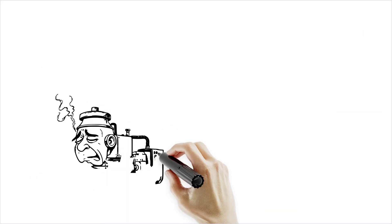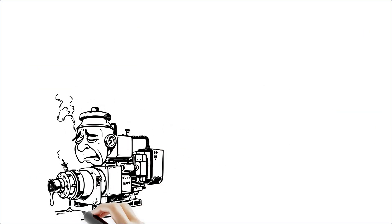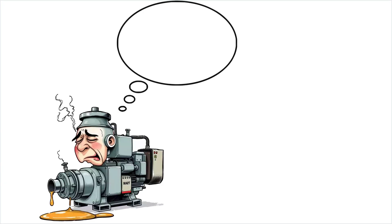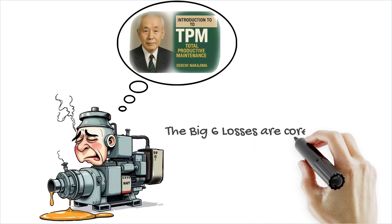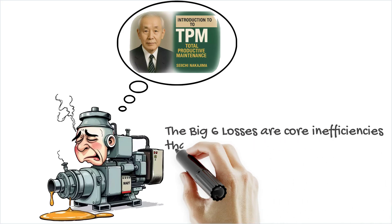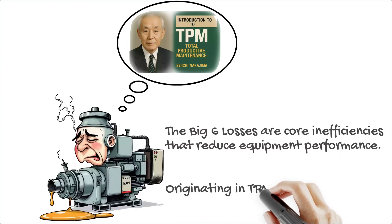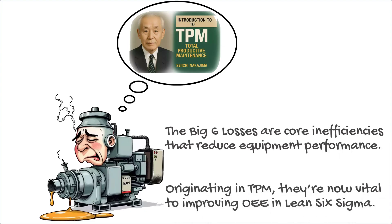The Big Six Losses are the major types of inefficiencies that hurt equipment performance and productivity. They were first defined in Total Productive Maintenance (TPM), and are now a core part of Lean Six Sigma's approach to maximizing Overall Equipment Effectiveness (OEE). Let's walk through each loss, and I'll give simple examples along the way.